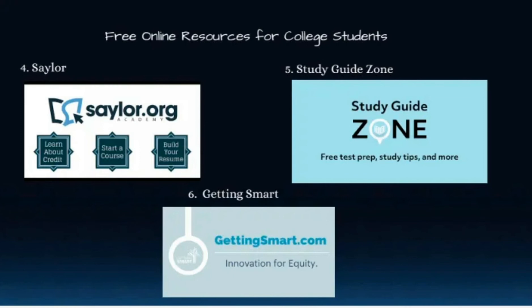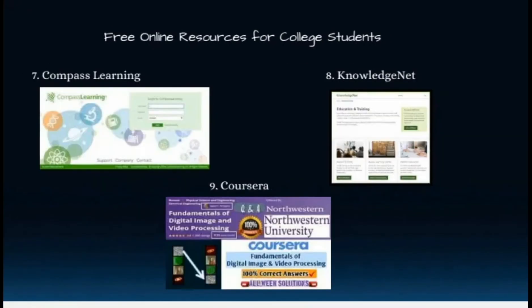Sixth is Getting Smart — one of the most passionate learning-focused communities on the web. The website will lead you to ways and resources that will increase your studying effectiveness. Compass Learning is a website that helps teachers understand the strengths, motivations, and needs of every student so they can personalize their approach to different types of learners.